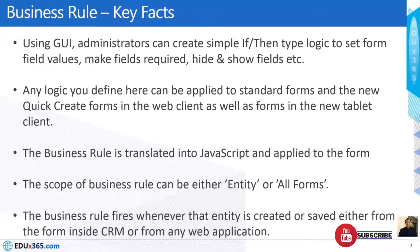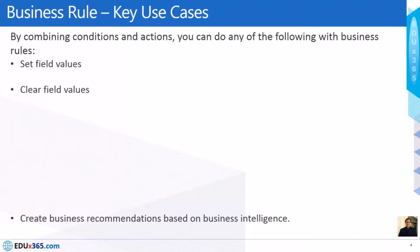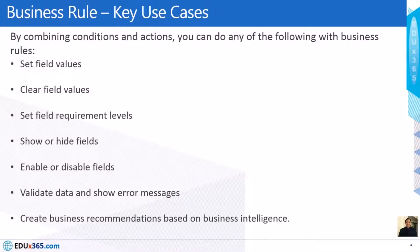The business rule fires whenever that entity is created or saved, either from the form inside CRM or from any web application. This screen lists all the scenarios we can achieve by combining conditions and actions in business rules — for example: setting field values, clearing field values, setting field requirement levels, showing or hiding fields, enabling or disabling fields, validating data and showing error messages, and creating business recommendations based on business intelligence.